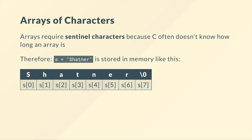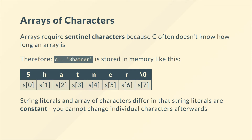A subtle point: string literals and arrays of characters differ in that string literals are constant. So using the string literal syntax, if I try to say s[0] = 'C', I cannot do that — you cannot change individual characters afterwards. Whereas if I define this as an array of characters, I could modify individual characters. You can modify the variable itself though — I can reassign s to another string literal entirely. But you cannot change individual characters of a string literal — we will cover this more specifically in a later video.